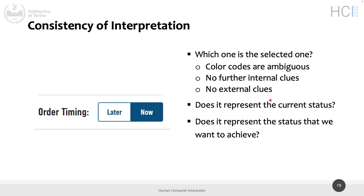It's the active one. So maybe if you press 'later,' something else on the page changes, like it will allow you to select a moment later for the order. Maybe. But this is again not really complex to fix — just different choices of color or giving some clue that this is selected or not. Another question we can ask here is: does this button represent the current status or the status we want to achieve? If I see 'now' selected, is that the current status, or do I need to press 'now' because I want my order prepared now?